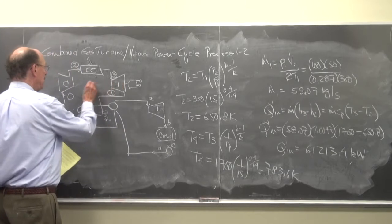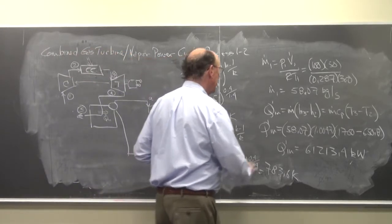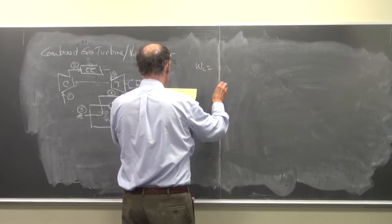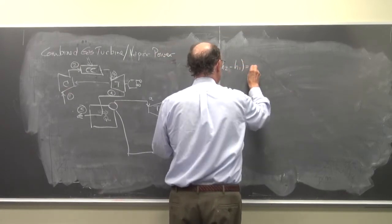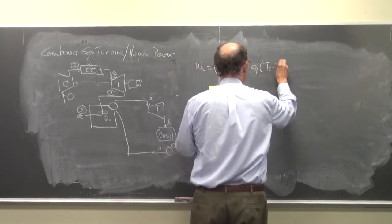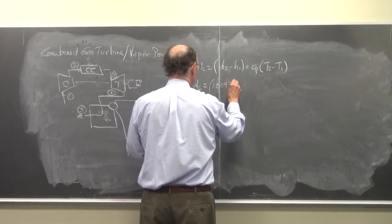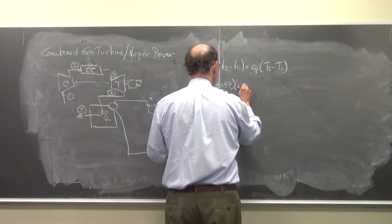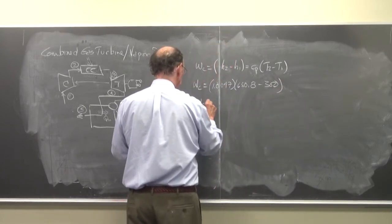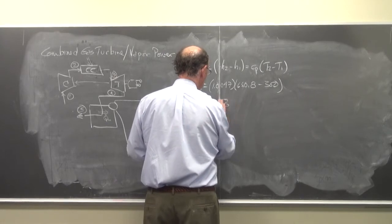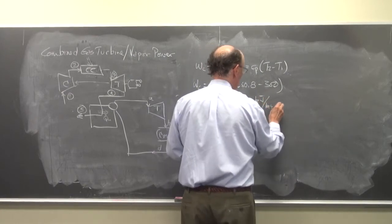So now let's find out what W net is here. Remember, part of the turbine work went back there. Let's find W net for the gas turbine. So Wc is equal to H2 minus H1, which equals Cp times T2 minus T1. Wc is equal to 1.0047 times 650.8 minus 300. Wc is equal to 352.4 kJ per kg. And this is air.